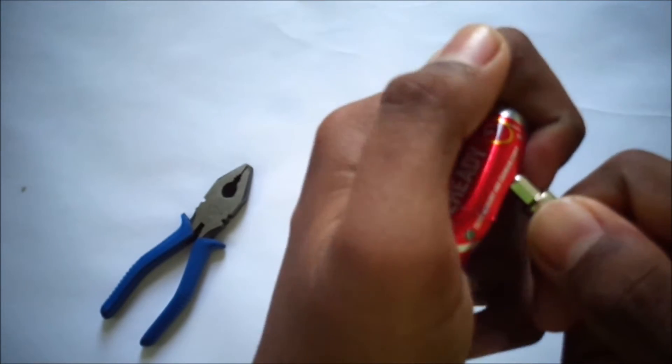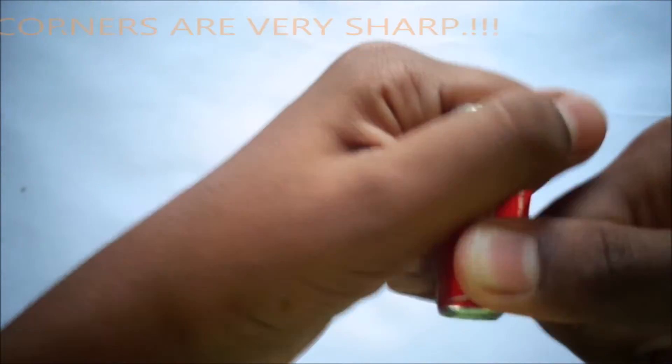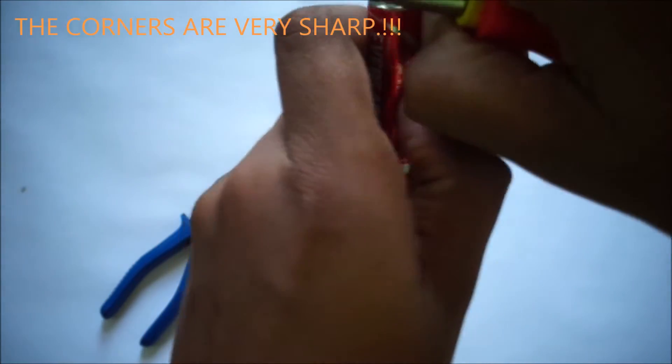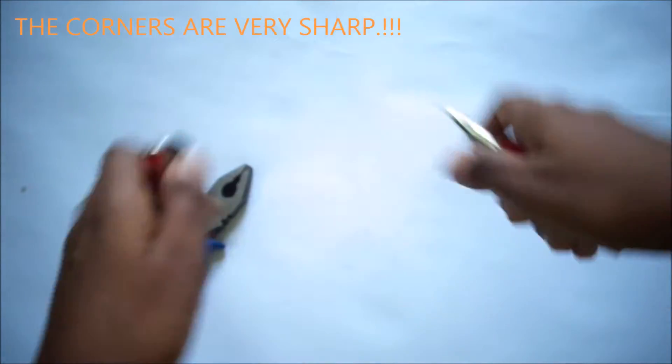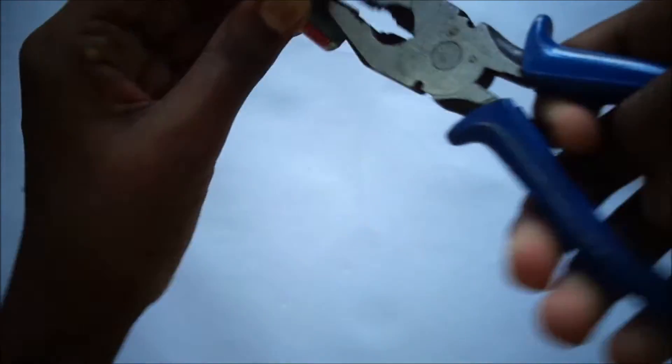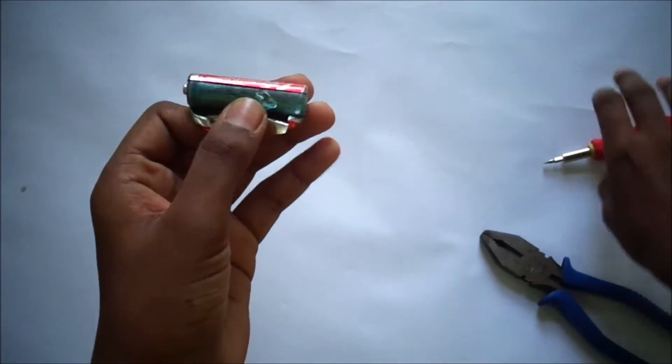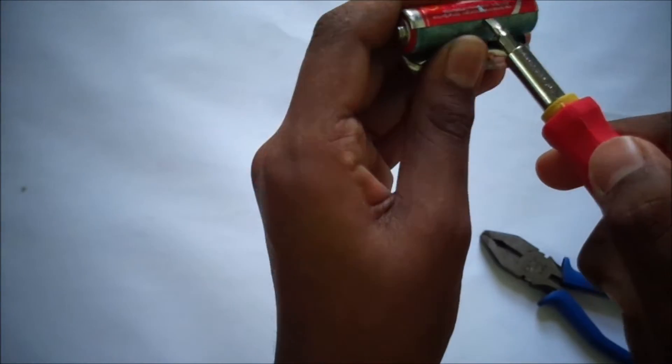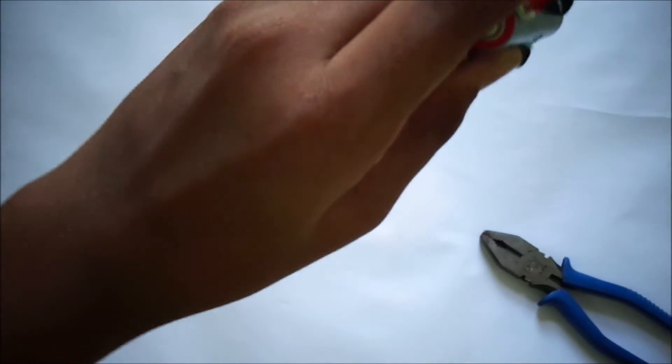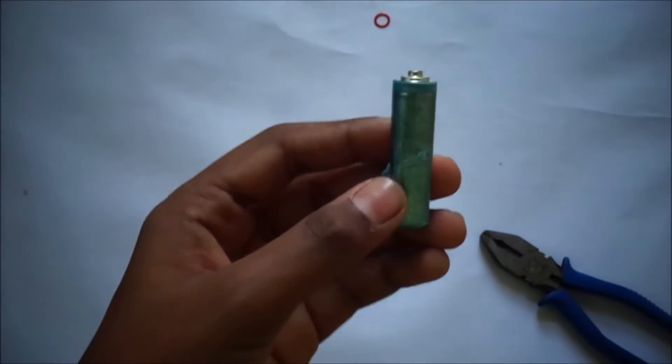You can see here it is coming out. Now you can use the plier for taking it like this. Now we can take the other side also.